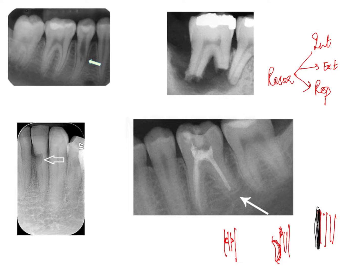Internal resorption is also known as pink tooth of Mummery, also called odontoclasia, and is referred to as idiopathic internal tooth resorption. In about 60% of cases, the most important cause for internal root resorption is pulpitis. Radiographic imaging is very important when you are suspecting internal resorption.